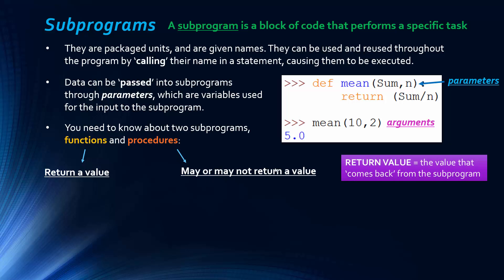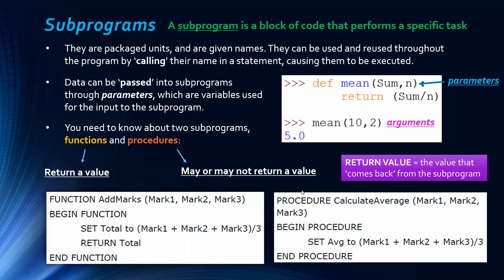The return value — another term on the specification — is just a value that comes back from the subprogram to the calling unit. In the example, the data returned is 5 because it's 10 divided by 2. Looking at pseudocode from edXcel, the function has a return line of code and the procedure doesn't — the parameters are mark1, mark2, and mark3 in both cases.